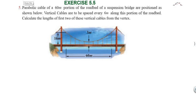Hi students, greetings from Success Education Academic. This is Exercise 5.5, question number 5. A parabolic cable of 60 meter portion of the roadbed of a suspension bridge are positioned as shown below. Vertical cables are to be spaced every 6 meters along this portion of the roadbed. Calculate the length of the first two of these vertical cables from the vertex.